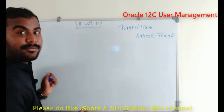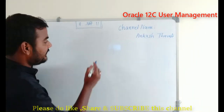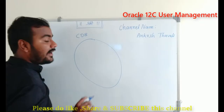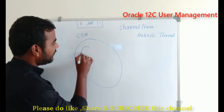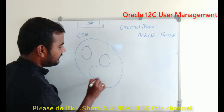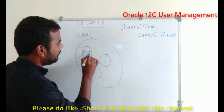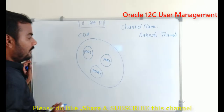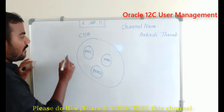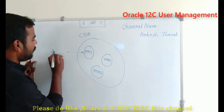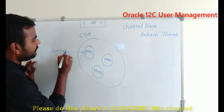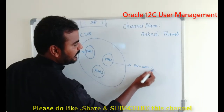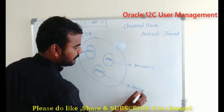Let us see these things on the whiteboard. As we know, Oracle 12c is a multi-tenant architecture, so we can have a container database which is a CDB, and inside the container database we can have multiple pluggable databases — PDB1, PDB2, and PDB3. On each pluggable database we can have our own applications: application 1, application 2, and application 3.